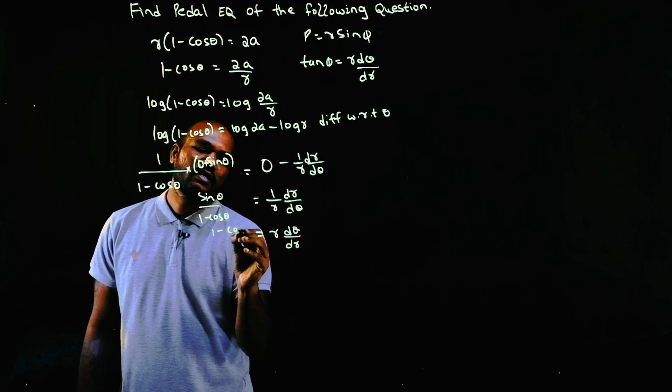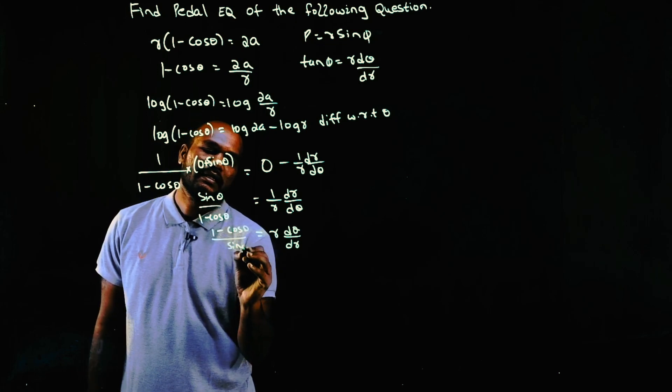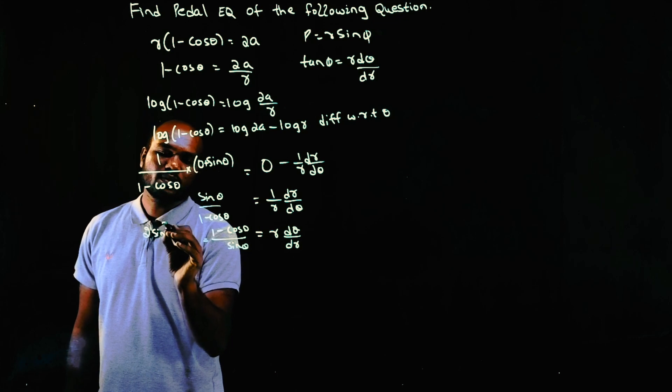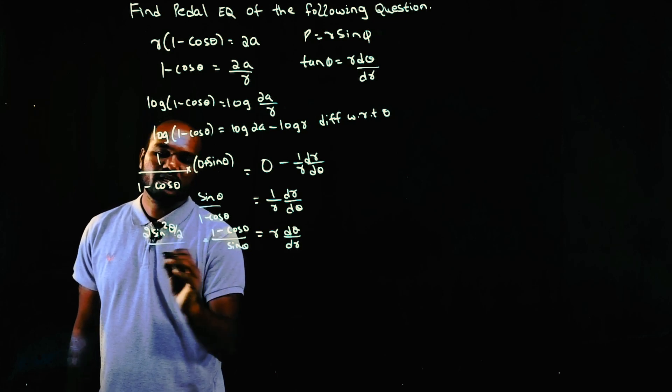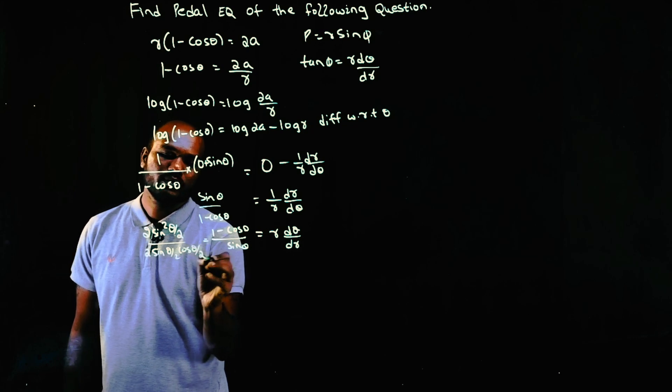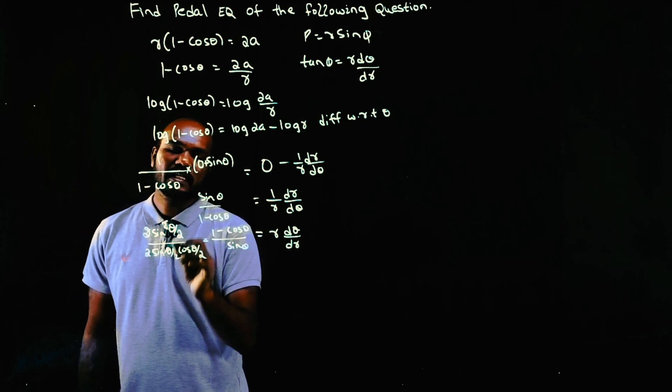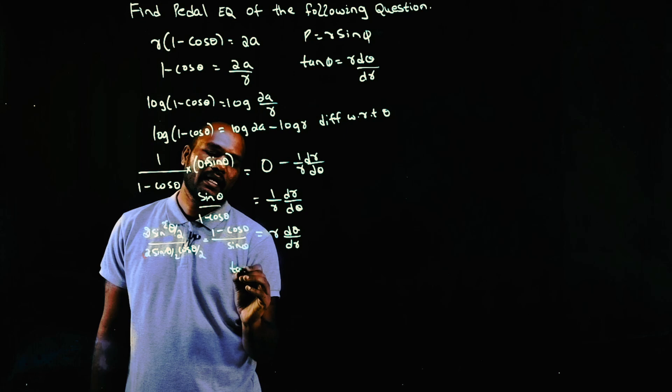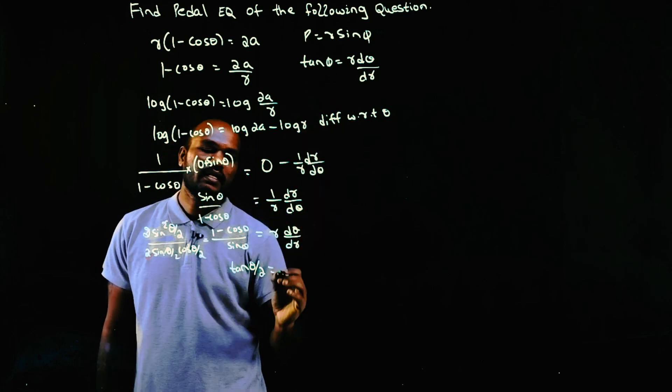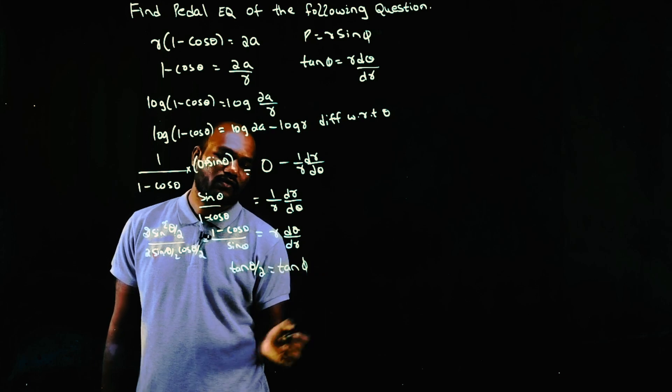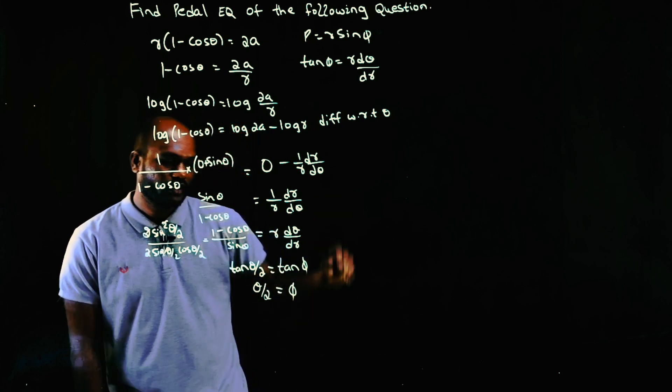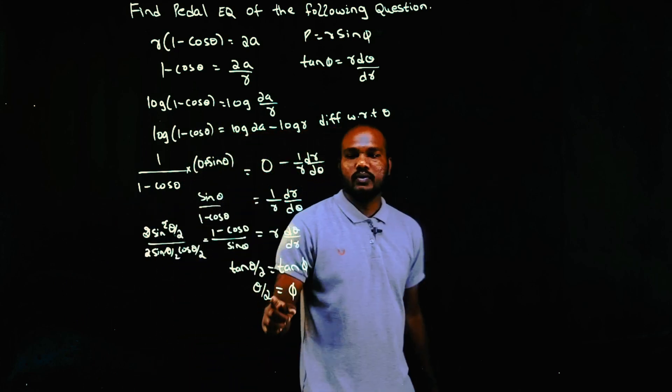This becomes (1 - cos θ)/sin θ. Now 1 - cos θ = 2 sin²(θ/2), and sin θ = 2 sin(θ/2) cos(θ/2). The 2s cancel, one sine cancels, leaving sin(θ/2)/cos(θ/2) = tan(θ/2). So tan(θ/2) = r dθ/dr = tan φ. Therefore φ = θ/2. We found φ so we can find p = r sin φ.